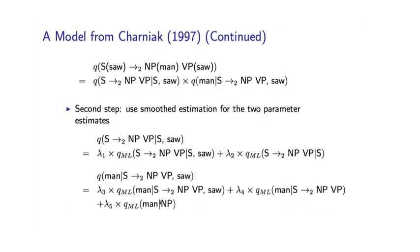Now let's look at the second parameter and we'll use a very similar method. Again, a smooth estimate. I'm using parameters lambda 3, lambda 4, lambda 5 to distinguish these from lambda 1 and lambda 2. Again, we have lambda 3, lambda 4, lambda 5 greater than or equal to 0, lambda 3 plus lambda 4 plus lambda 5 equals 1, the usual constraints.